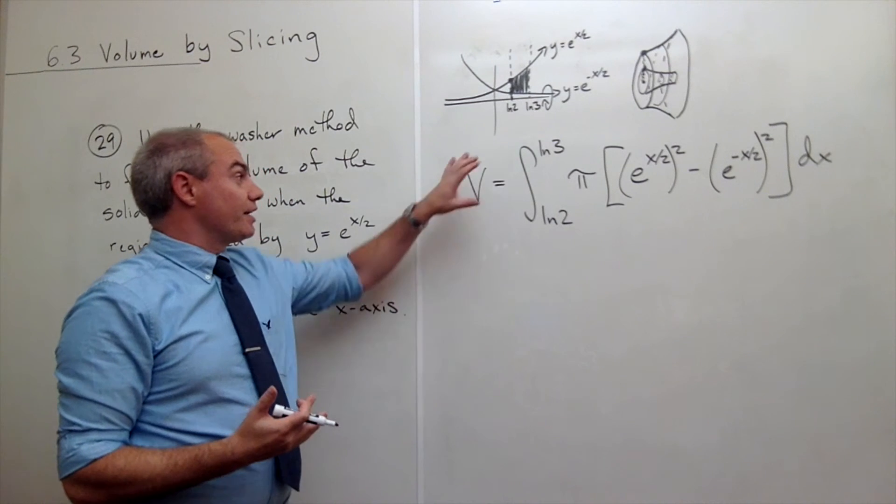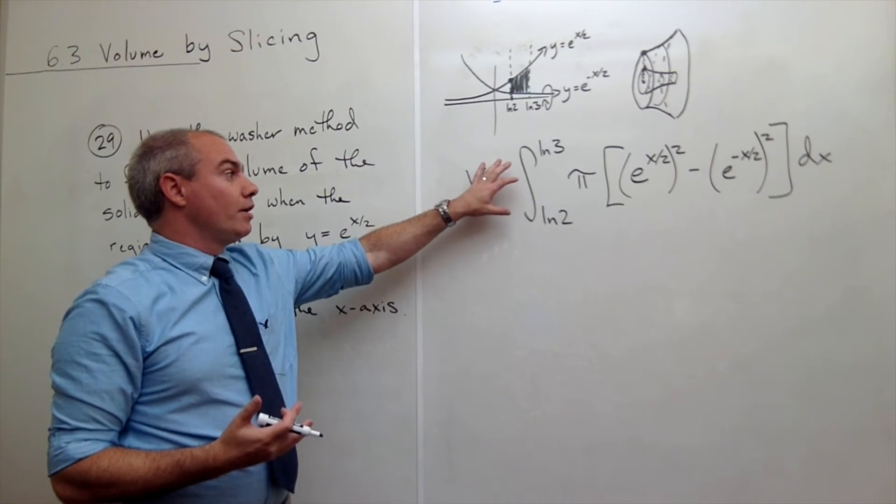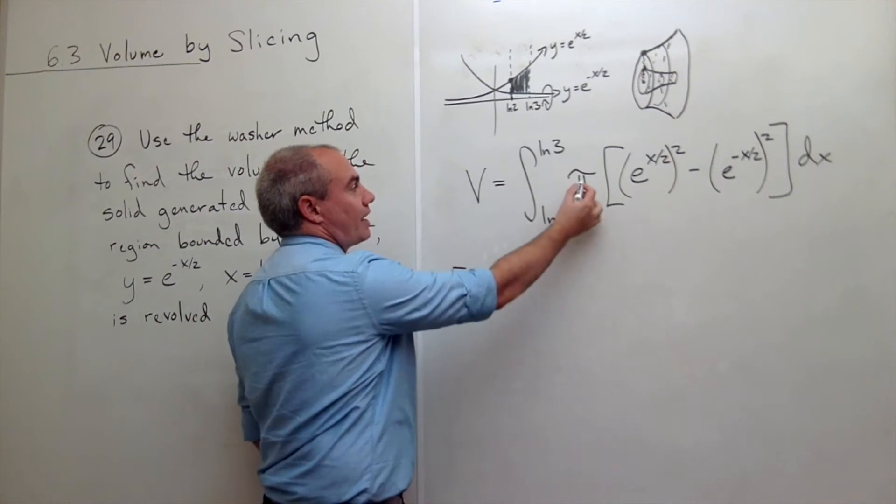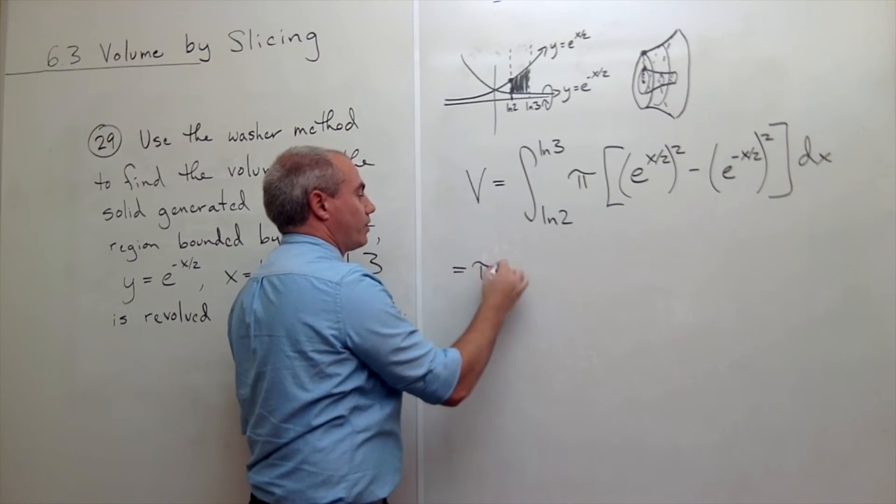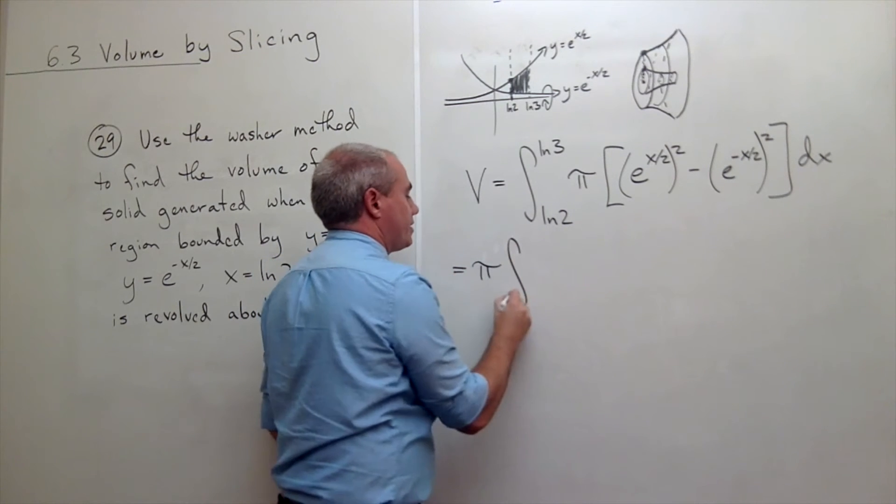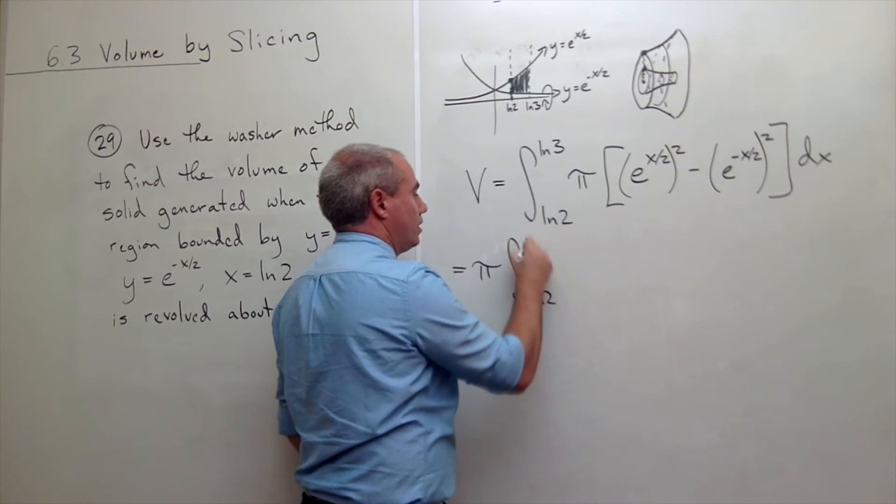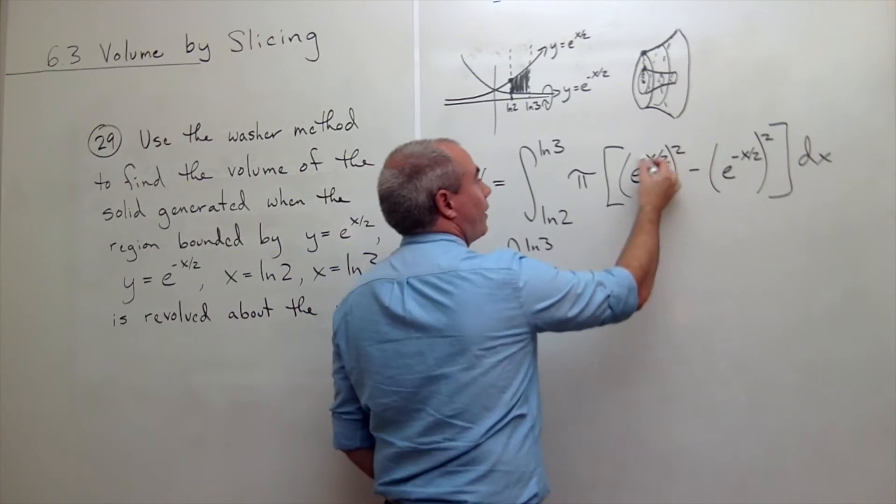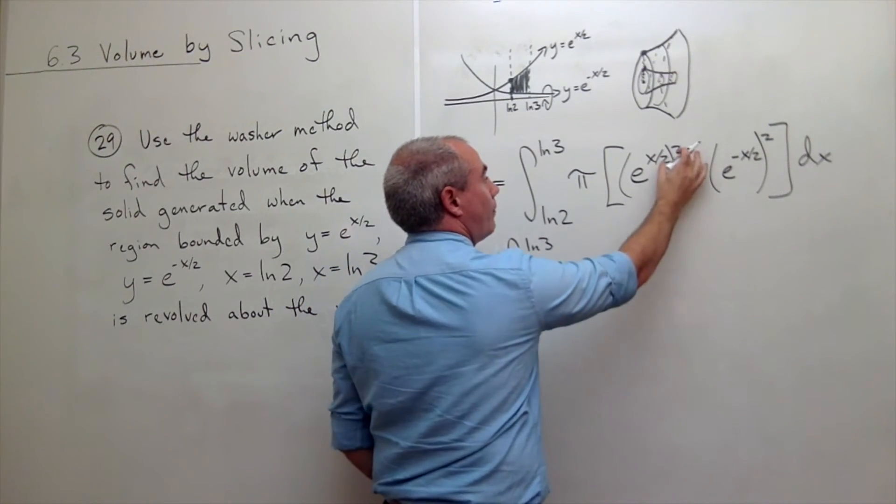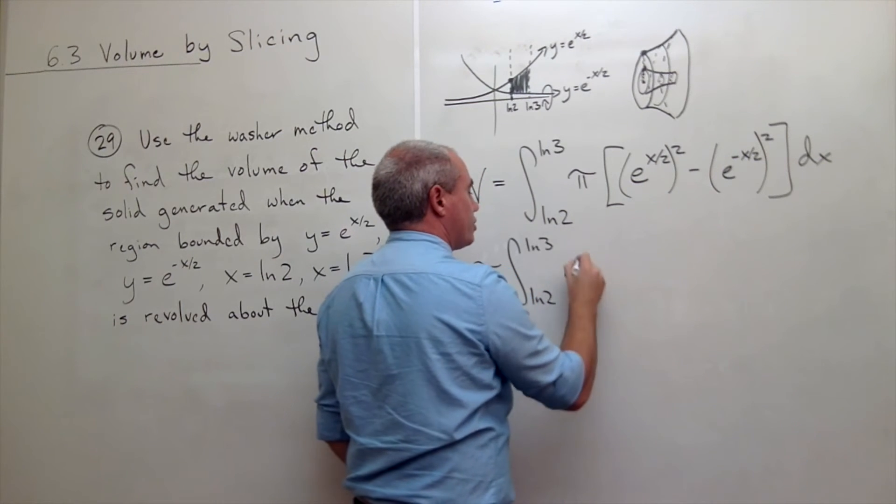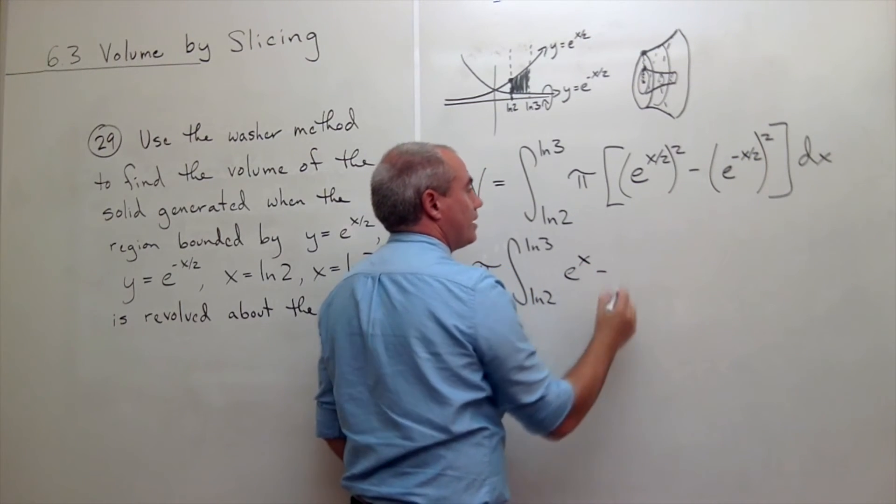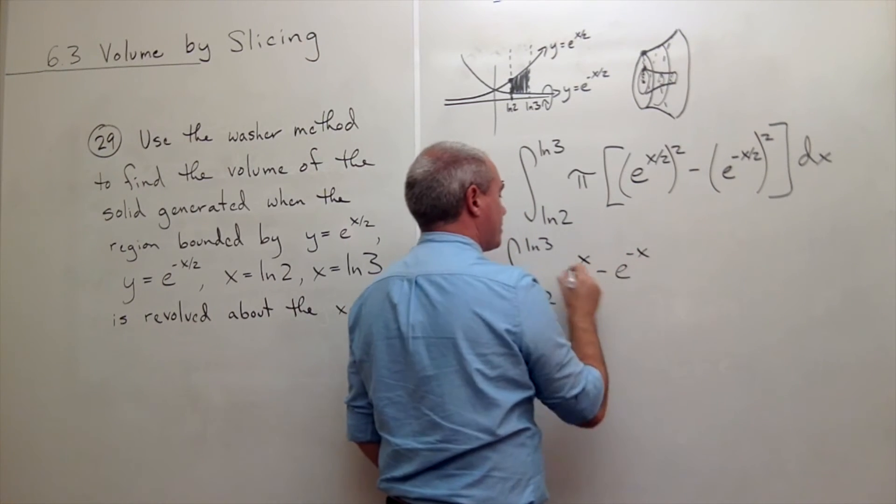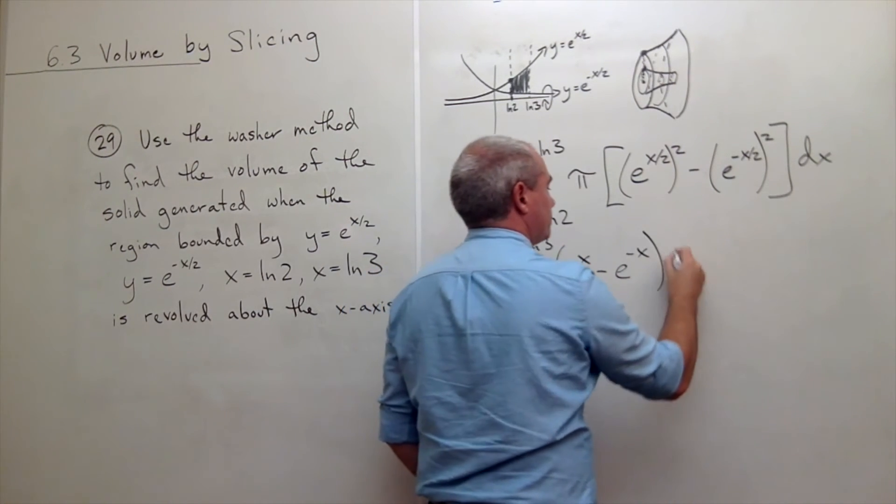Now let's work on this thing to get it into a form where we can take the antiderivative. So I'll rewrite this. I can pull the pi outside of the integral. And then I'll rewrite this as the integral from ln 2 to ln 3 of, if I have a power raised to a power, I multiply the powers. So this is just e to the x minus, multiply these powers, I get e to the minus x dx.